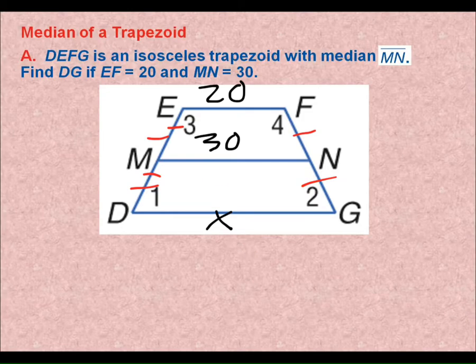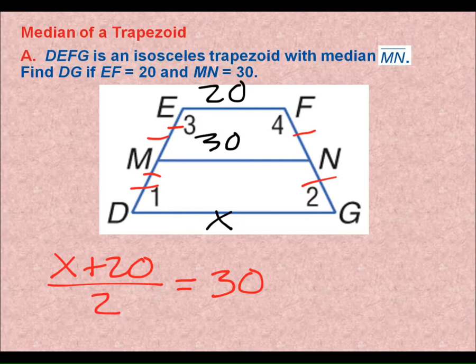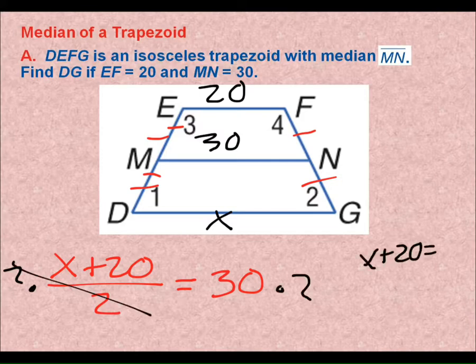I know that this number is half of the two bases being added together. If I have one base plus another base, half of that number is equal to my median. Half of the two bases added together is equal to my median. So I can just solve this algebra problem for X. Or what plus 20, I'd want it to equal 60, because half of 60 is 30. But if I want to solve this algebra problem, I will just multiply both sides by two to get that to cancel.